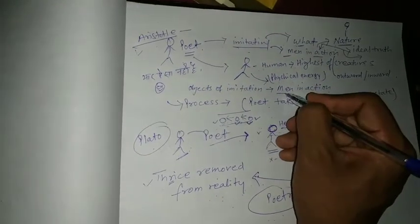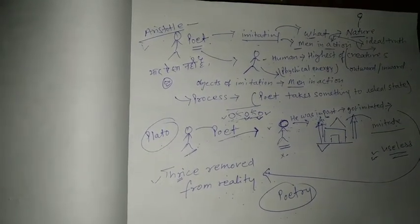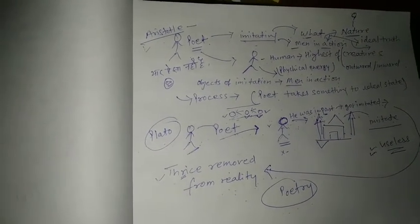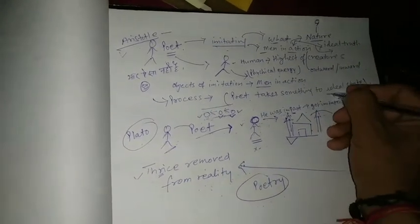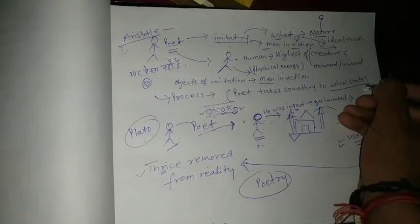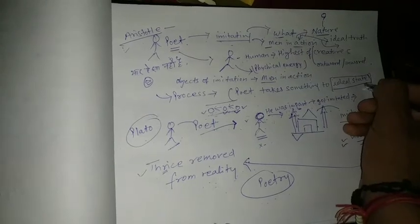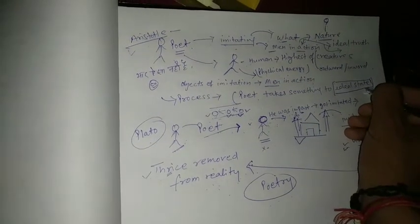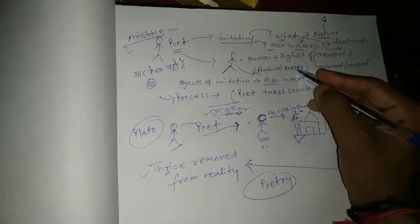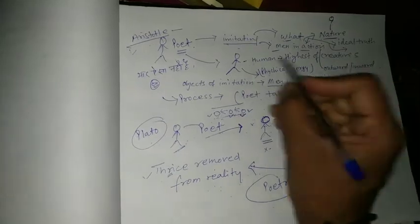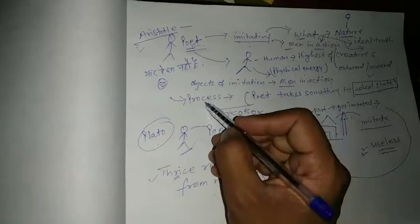So, man in action doesn't mean people are working somewhere, the actions of people, no, but what is going on, it is a process of being ideal, ideal state. We all are, there is something going on inside us all, in all ages, and all people are trying to achieve ideal state for human, and this is the process what poets are imitating. That's why the process of imitation is different in three ways.